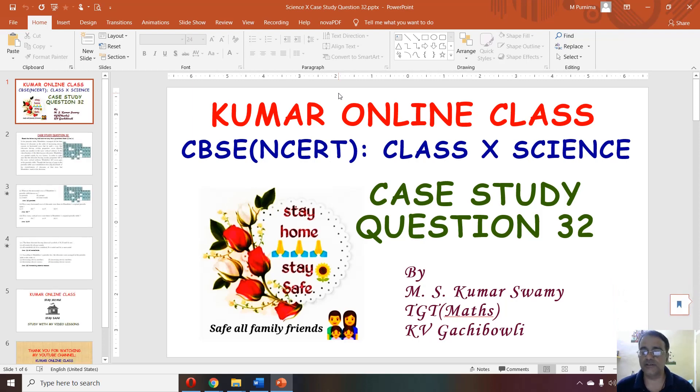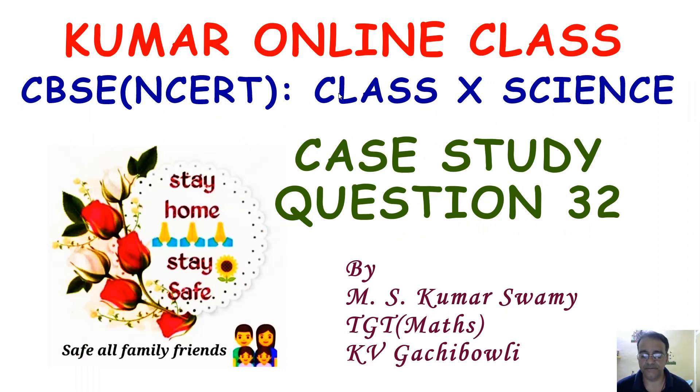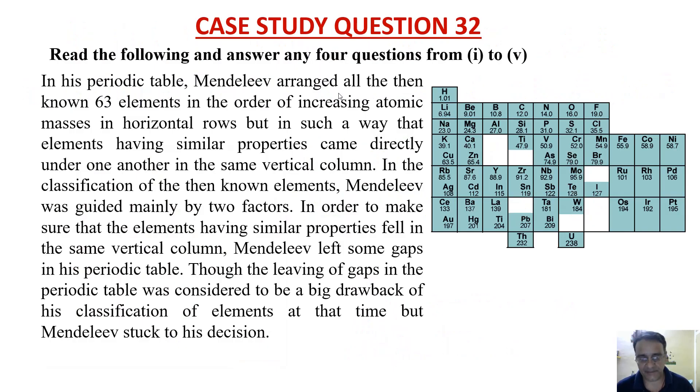Now we are going to start case study question number 32, and this case study question is based on periodic table. In his periodic table, Mendeleev arranged all the then known 63 elements in the order of increasing atomic masses in horizontal rows.